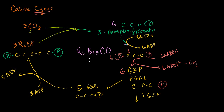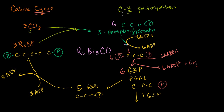This type of photosynthesis is called C3 photosynthesis. The reason it's called C3 is because the very first product you get when you fix carbon dioxide — when you take it from gaseous form and put it into a molecule — is a three-carbon molecule: phosphoglycerate. That's where the three in C3 photosynthesis comes from.